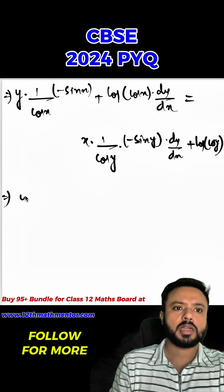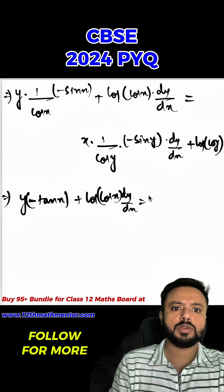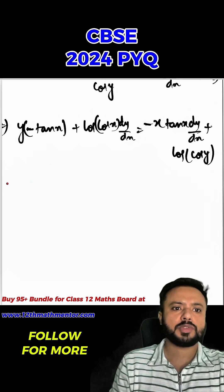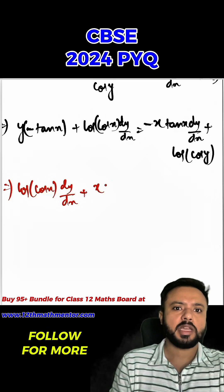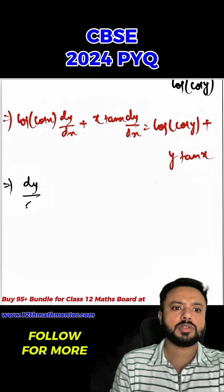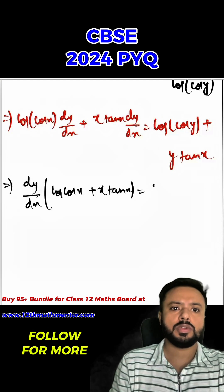Now we will arrange everything. We get y into minus tan x plus log of cos x into dy upon dx equals negative x tan y into dy upon dx plus log of cos y. Bringing all dy upon dx terms to one side: log of cos x times dy upon dx plus x tan y times dy upon dx equals log of cos y plus y tan x. Taking dy upon dx common: dy upon dx times (log cos x plus x tan y) equals log cos y plus y tan x.